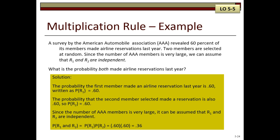So let's take a look at an example. A survey of the American Automobile Association revealed 60% of its members made airline reservations last year. Two members are selected at random. Since the number of AAA members is very large, we can assume that R1 and R2 are independent. What's the probability both made airline reservations last year?